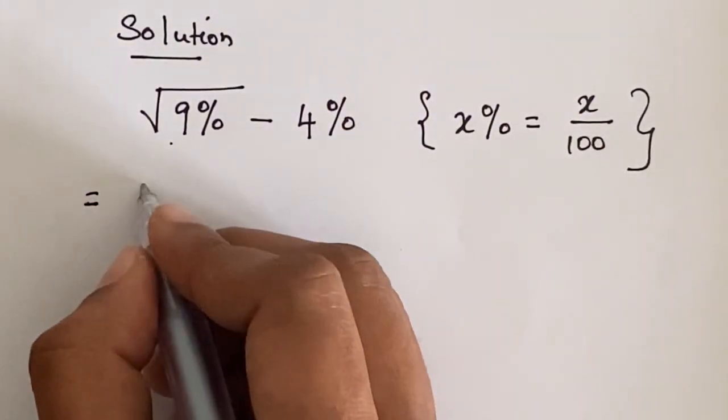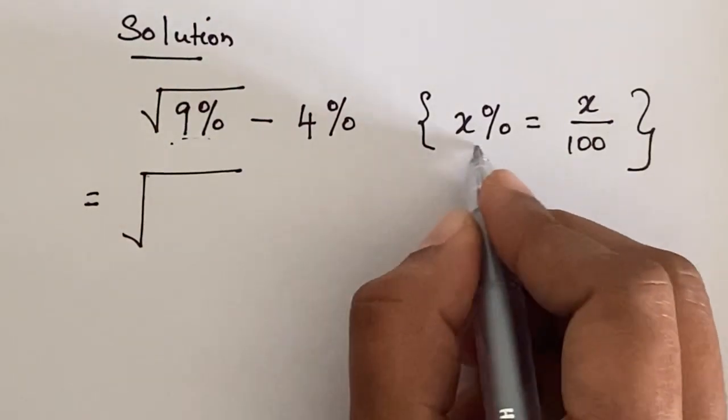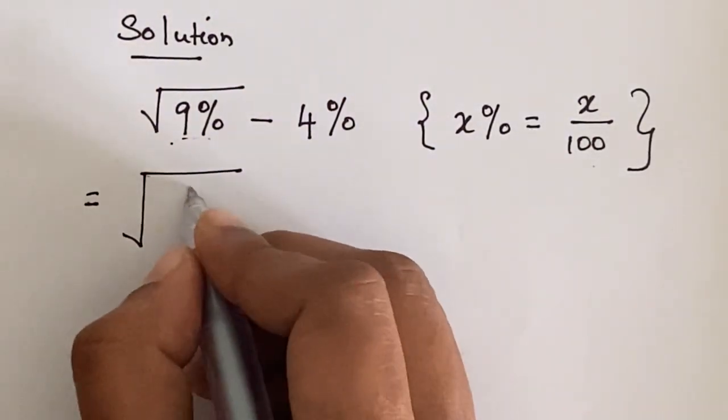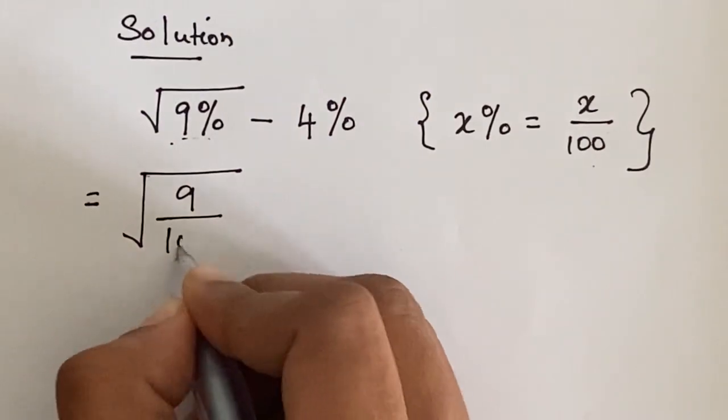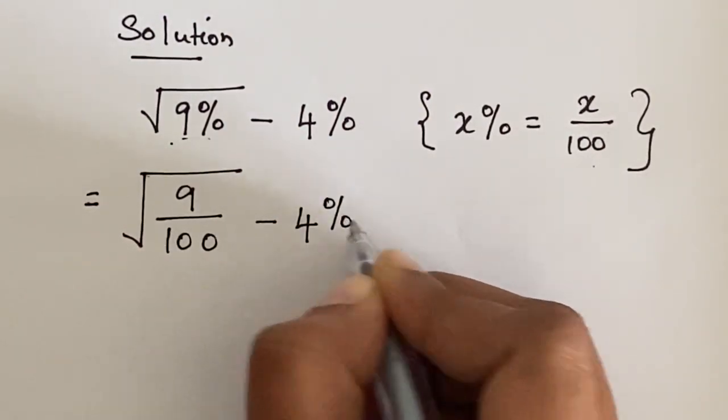Similarly here, square root of 9 percentage can be expressed as 9 over 100 minus, take the 4 percentage as it is.